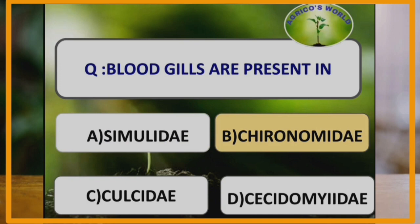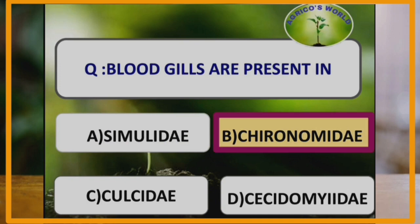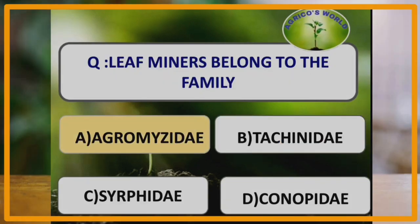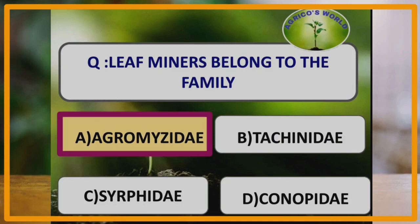Blood gills are present in the family Chironomidae. Two pairs are present in the penultimate segment and a group of four shorter annulated gills are also present. Leaf miners belong to the family Agromyzidae of the order Diptera and suborder Cyclorrhapha.